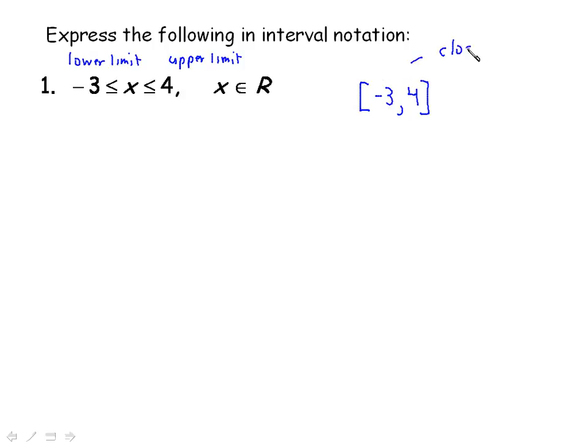And your closed interval simply means that we are including the endpoints. So by using this square bracket, we mean we're including negative 3 as the lower limit, and we're including 4 as the upper limit. So somebody looks at this expression in interval notation, they're going to know that you mean negative 3 and 4, inclusive.